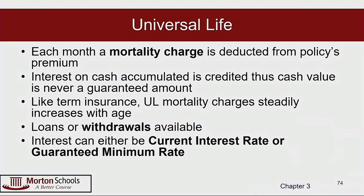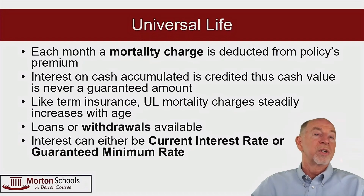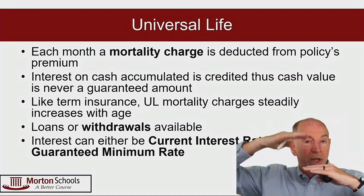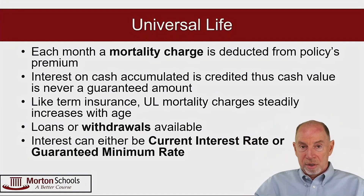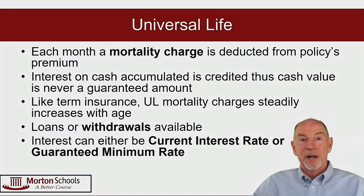The last thing that's adjustable in the universal life policy — not by you, but by the insurance company — is the interest rate. It is still a guaranteed product; the money is still in the general account. But here you have a range: there's a maximum and a minimum, and the interest rate can move between those two depending on the going rate in the marketplace. That's another reason they cannot tell you how much you'll have at age 65.